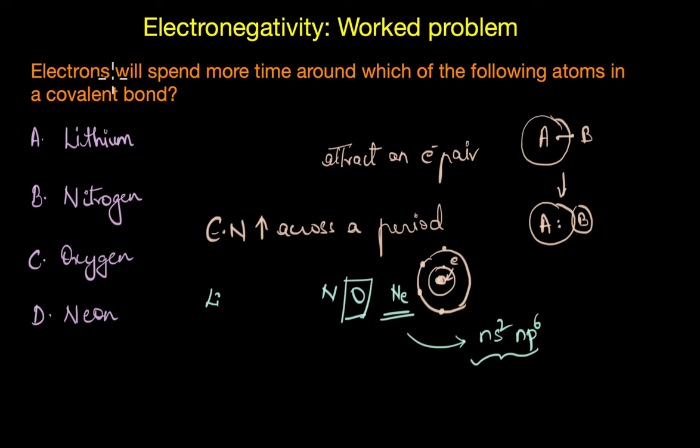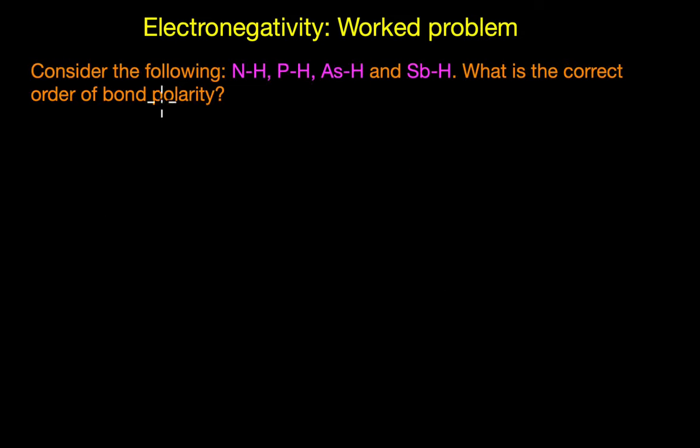That means the atom with the highest electronegativity in this case is oxygen, and electrons will spend more time around oxygen in a covalent bond. Now remember, this question has a basic assumption that these atoms are not bonded to a more electronegative atom. For example, if oxygen was bonded to a more electronegative atom than itself like a fluorine atom, then in this case electrons would obviously spend more time around the fluorine atom. So here we assume that all the atoms given are not bonded to a more electronegative atom.